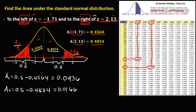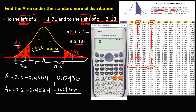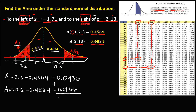Then to find the total area, we just need to add these two areas. So we have 0.0436 plus 0.0166 equals 0.0602. So the total area is 0.0602.